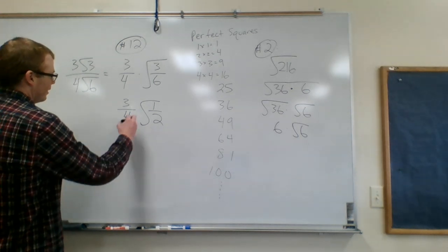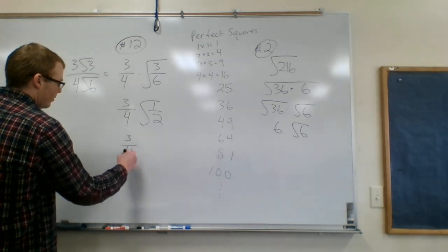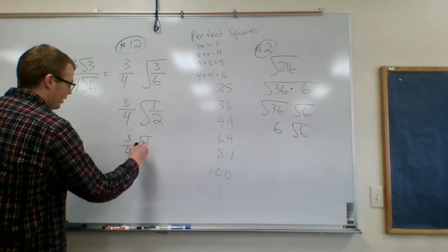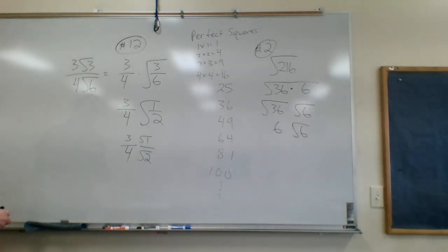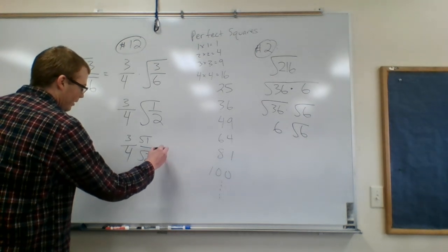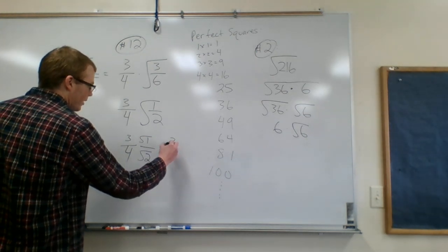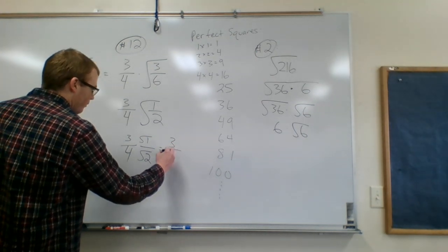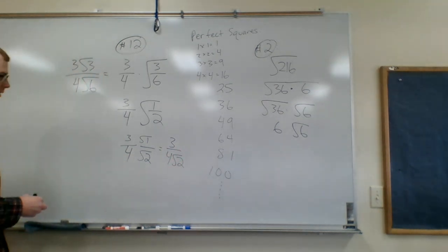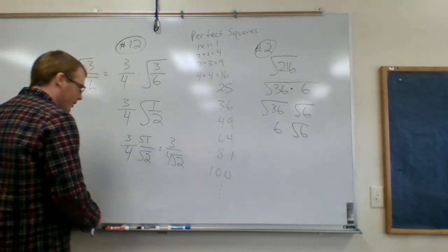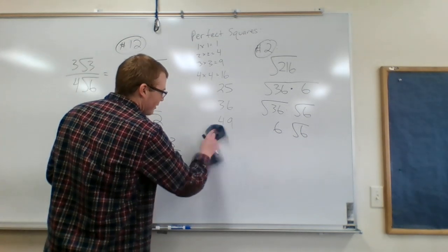Okay, next we can break this down more to square root of 1 over square root of 2. Okay, which square root of 1 is 1, so that's just 3 over 4 square root of 2. Let's see if I have enough room to complete this. Maybe I'll erase that.